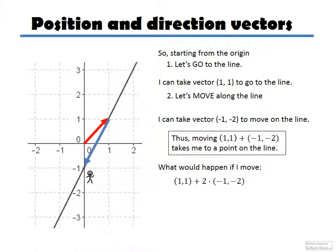But what happens if I move this vector here, the second one, the one that moves along the line, if I move it twice, or three times, or minus 1 time? Well, if I move it twice, I would go, okay, (1, 1) here,